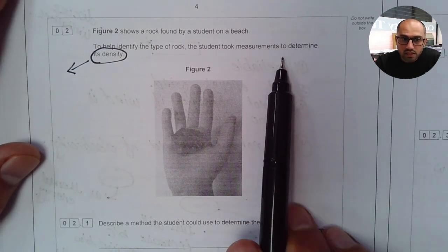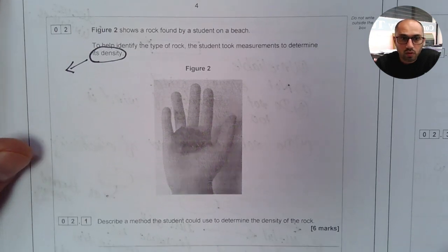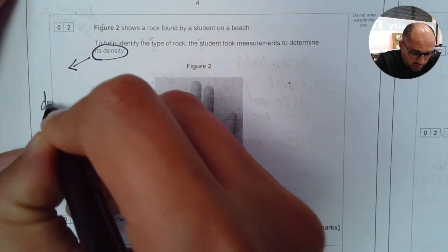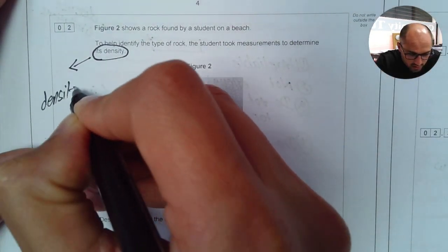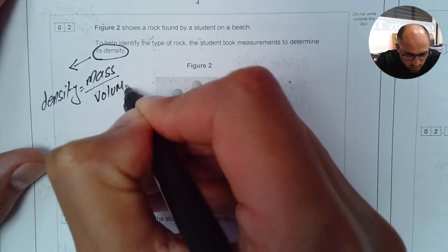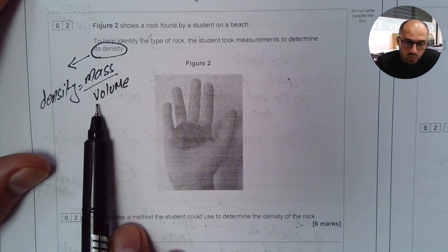Now they've taken some measurements to determine the density of the rock. To find the density, remind yourself what measurements need to be taken. So recall the formula for the density. The formula is density equals mass divided by volume. So the student will have to take a measurement for mass and a measurement for volume.